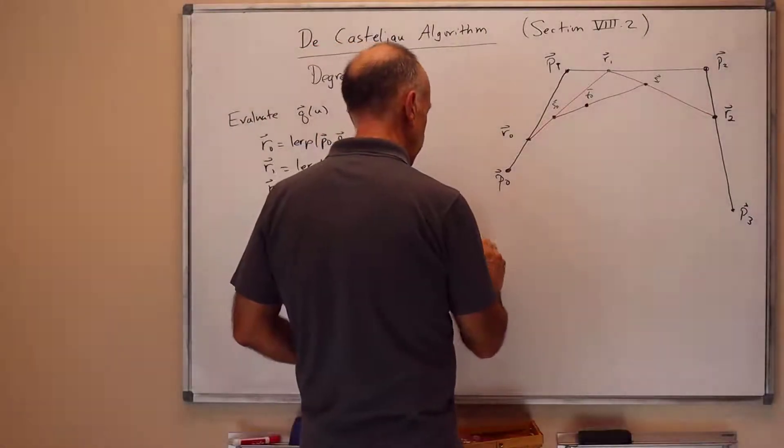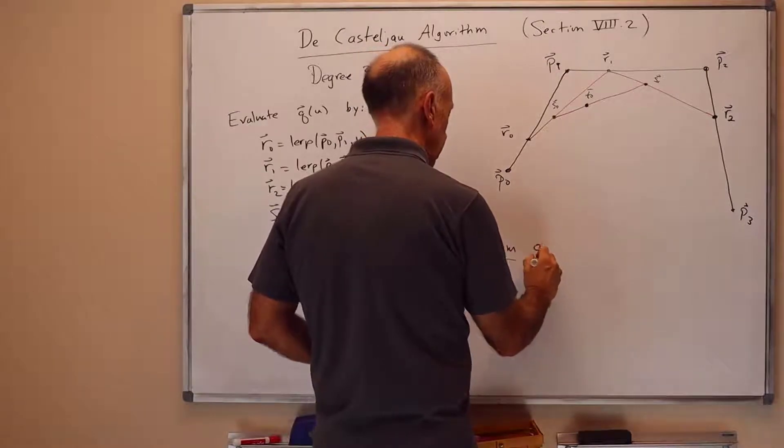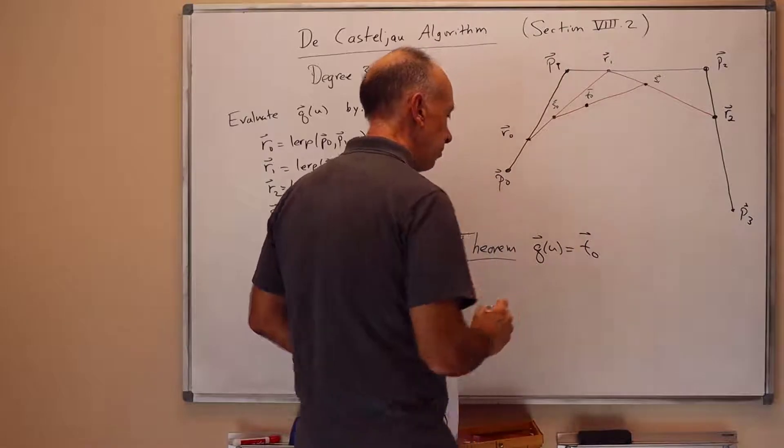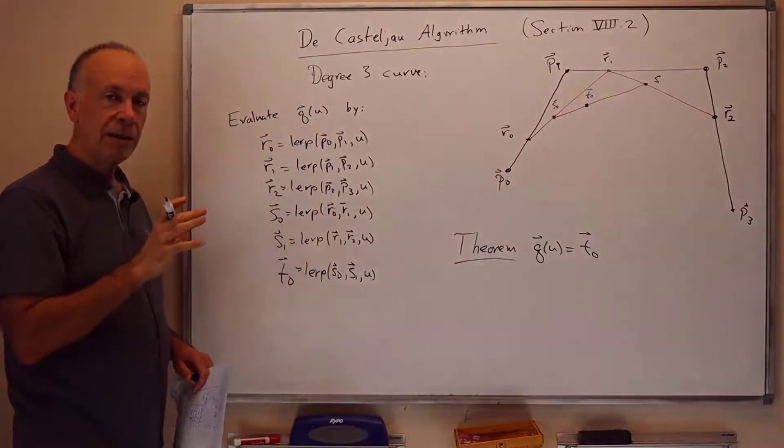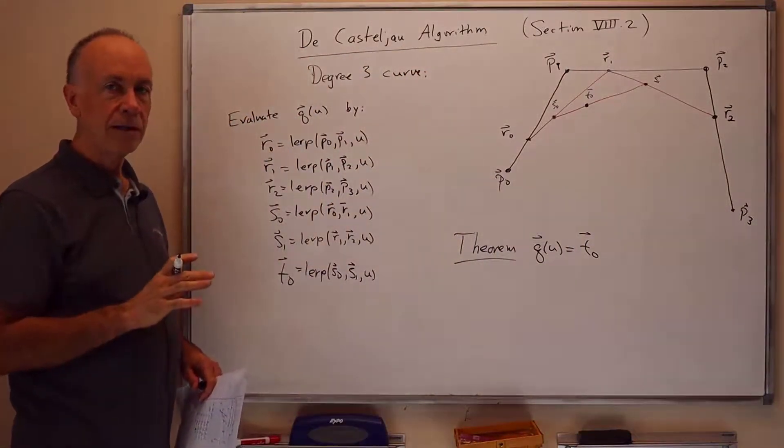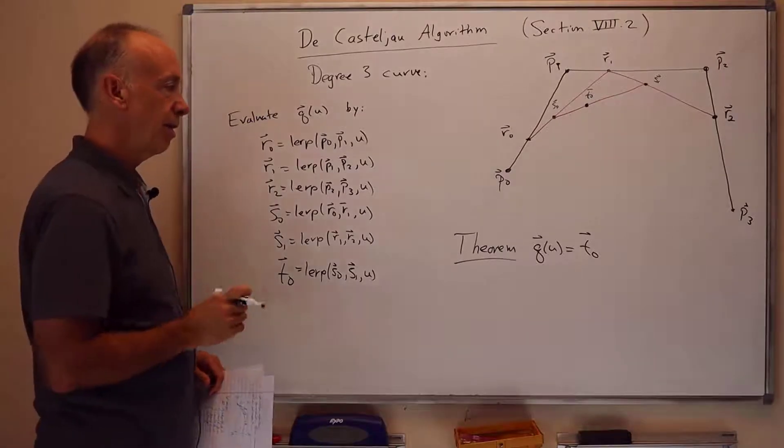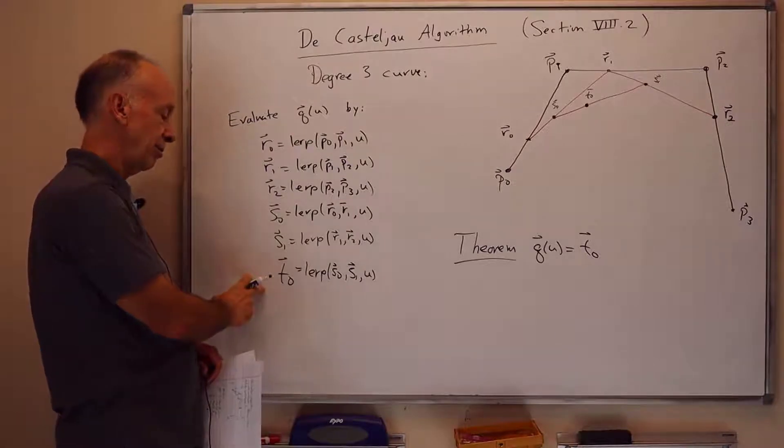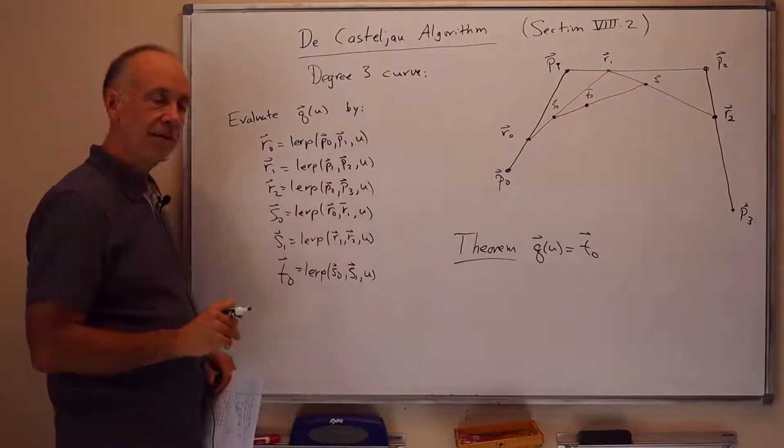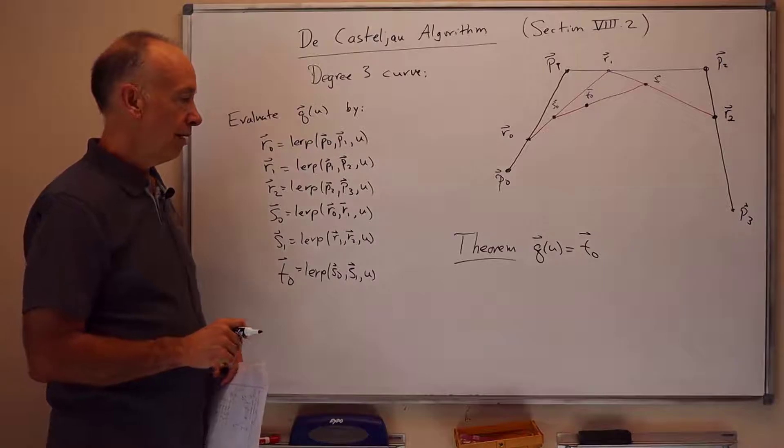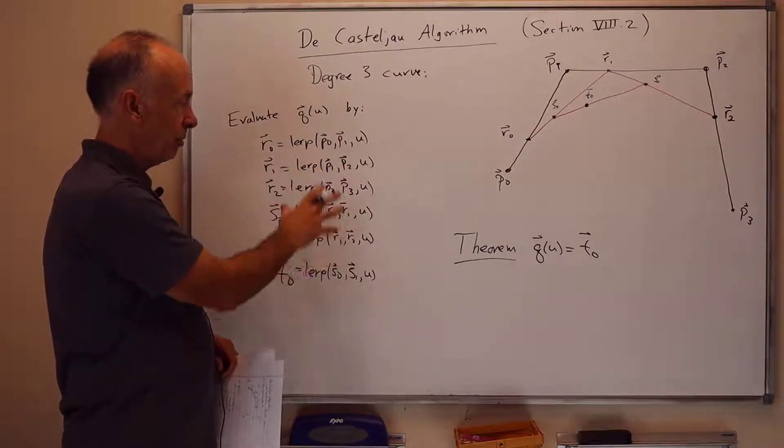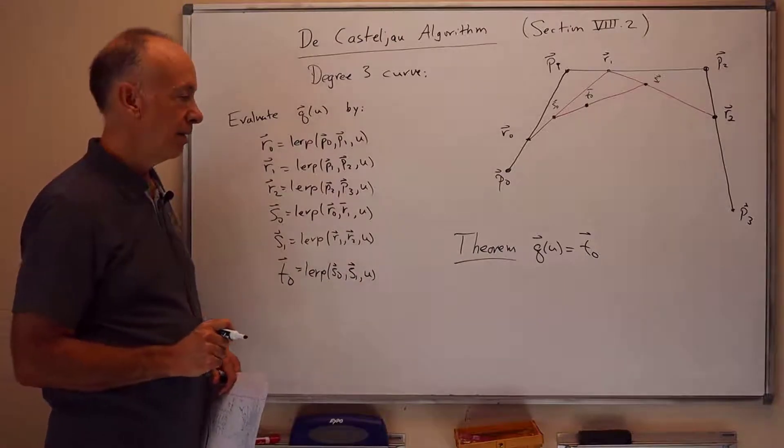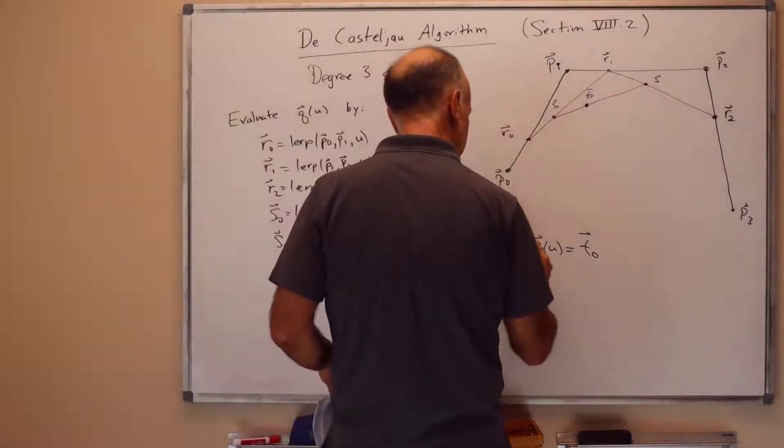So the theorem is that Q of U is equal to T0. This gives a very easy way to compute a point on the Bezier curve Q. We take a value U, for that value of U, we calculate the values R0 through T0, and then T0 is Q of U. And all we had to do was take lerps, weighted averages, between two points at each step to do the computation. So I can call that part A of the theorem.